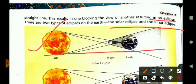Here, the path of the light of the sun is blocked by the moon, and the shadow of the moon is casting on the earth. This is solar eclipse.